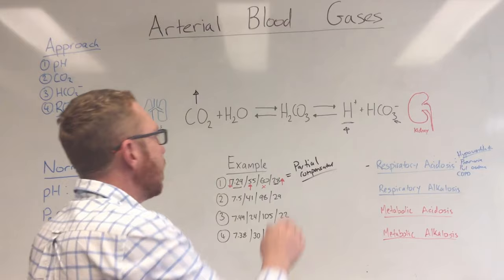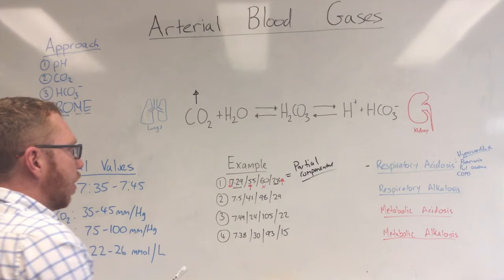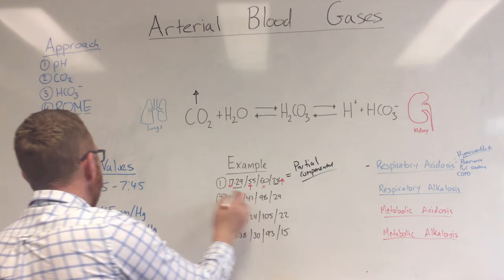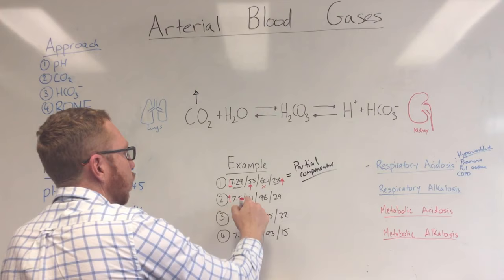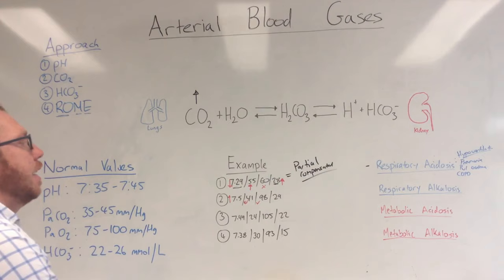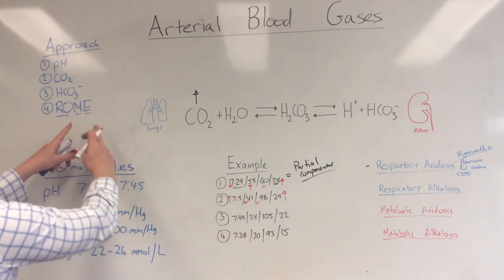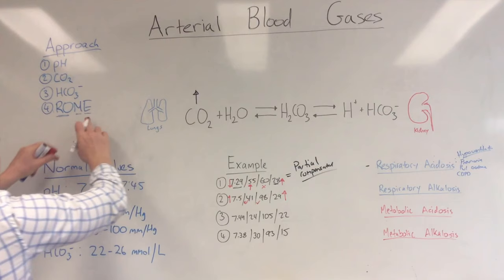Example two: 7.5 / 41 / 98 / 29. The pH of 7.5 is above 7.45, so it's high. The CO2 of 41 is normal. The O2 of 98 is normal. The bicarbonate of 29 is above 26, so it's high. The pH and bicarbonate are both going up in the same direction — by ROME, that's metabolic equal, so we know it's metabolic.